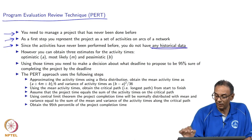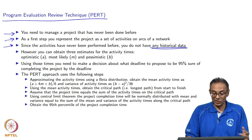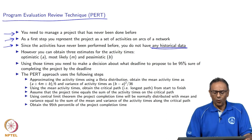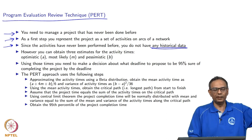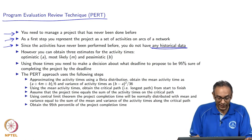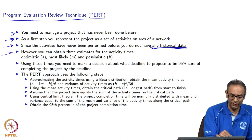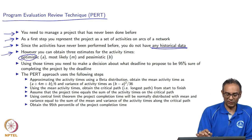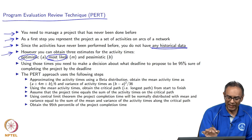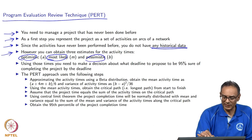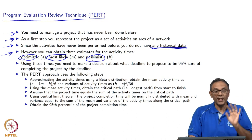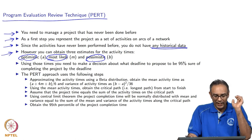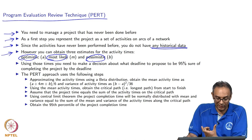Since we do not have any historical data, we are not going to be completely non-parametric — we are going to have some parametric estimates. For example, we can at least guess the fastest time we can complete an activity. That is called the optimistic estimate. We also estimate the most likely time and the pessimistic or worst-case time. So we have three numbers: A (optimistic/smallest), M (most likely/middle), and B (pessimistic/largest).